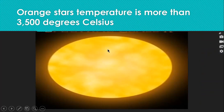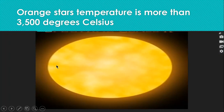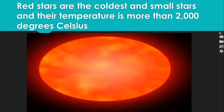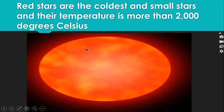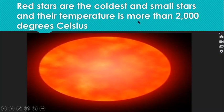Orange stars have a temperature of more than 3,500 degrees Celsius. Now, the smallest stars are the red stars. Red stars are the coldest and the smallest stars because their temperature is only about 2,000 degrees Celsius. Because their temperature is very low, the red stars do not shine brightly and you cannot see them with the naked eye.